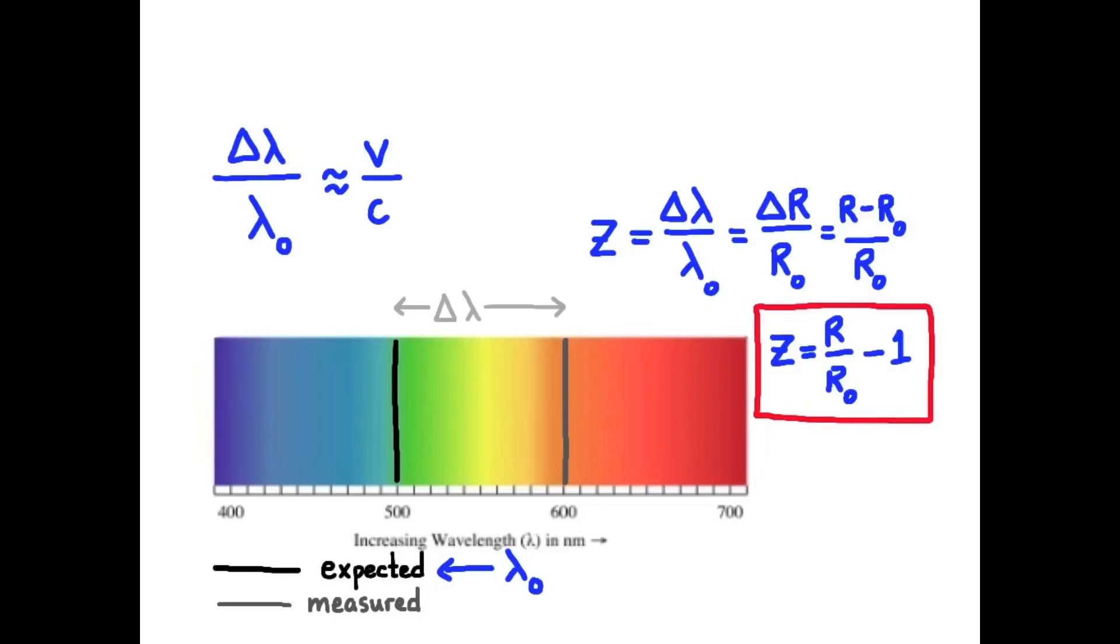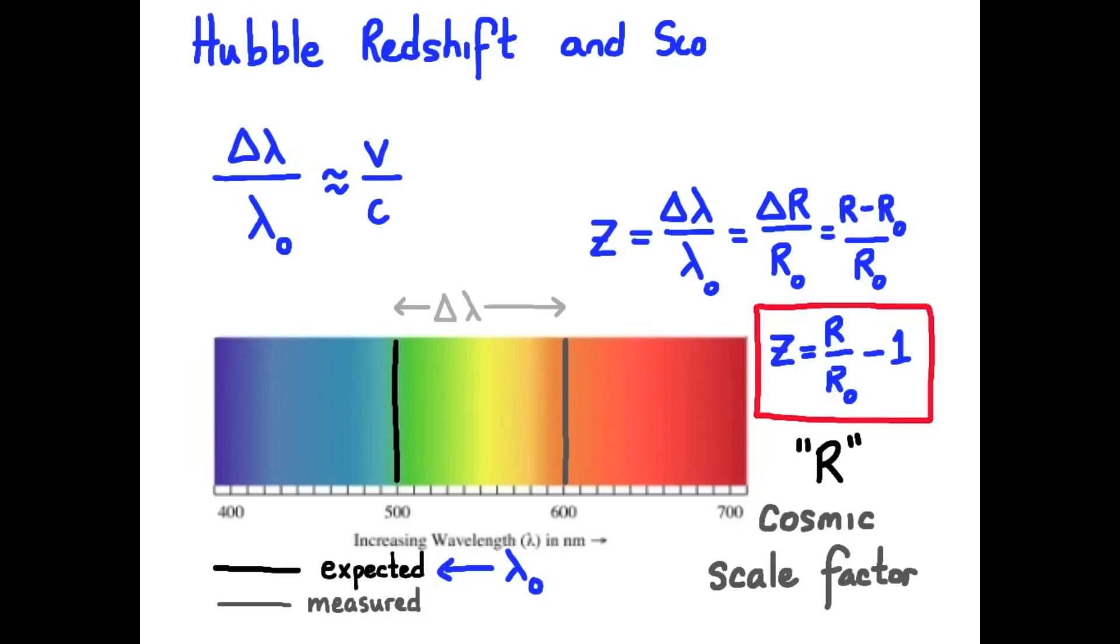R nought denotes the cosmic scale factor when the electromagnetic radiation of wavelength lambda nought was emitted. So delta lambda over lambda nought is equal to the change in the stretching, delta r over r nought. Or another way to write this, the redshift ratio z equals r over r nought minus 1. R again is the cosmic scale factor, a proper time measurement of the stretching of the universe. And this is Hubble redshift as space is expanded.